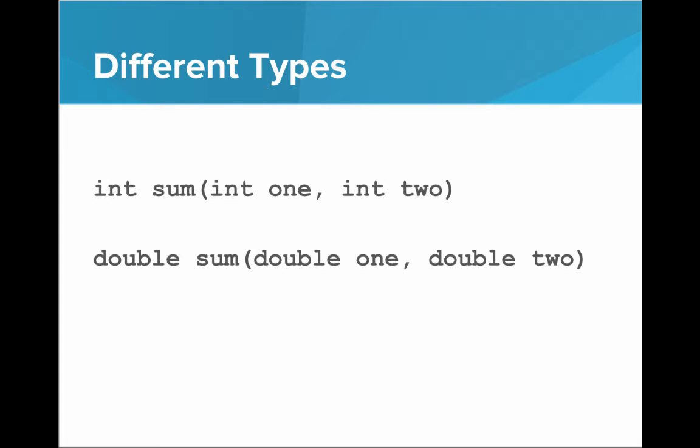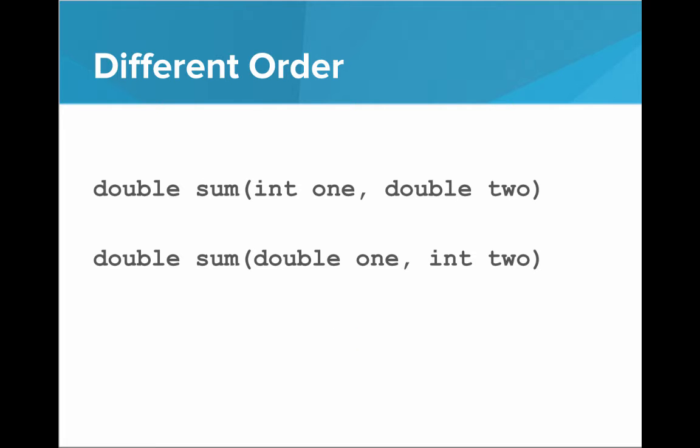So, how can we perform method overloading? We can have two methods with the same name that have different types. Int one, int two, double one, double two. That works. Can we have parameters in a different order? Takes an int followed by a double, or it takes a double followed by an int. That works as well. Java is able to tell the difference.